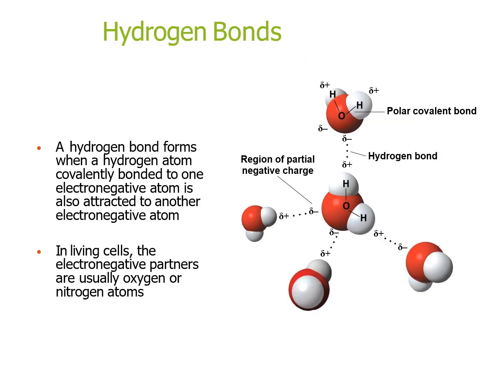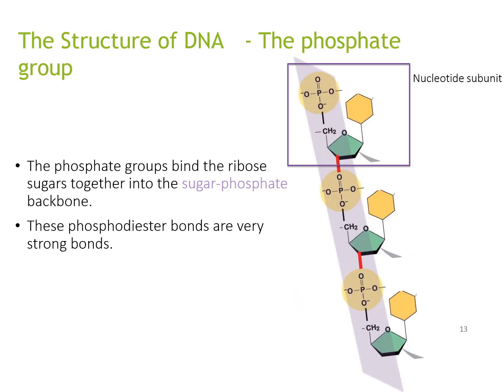Hydrogen bonds form when a hydrogen atom covalently bonded to one electronegative atom is also attracted to another electronegative atom. In living cells, the electronegative atom partners are usually oxygen or nitrogen atoms. The phosphate group binds ribose sugars together into the sugar-phosphate backbone via very strong phosphodiester bonds.